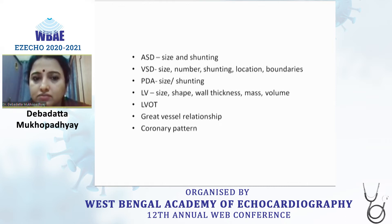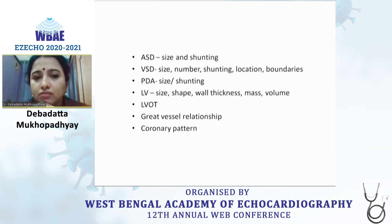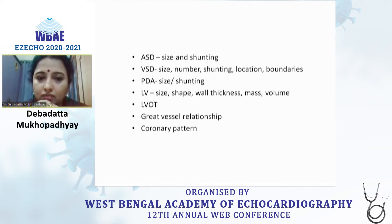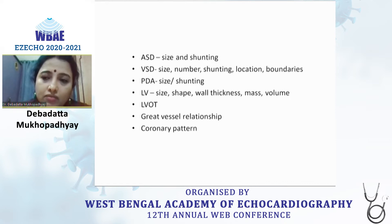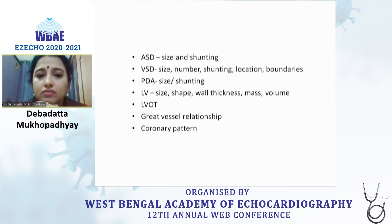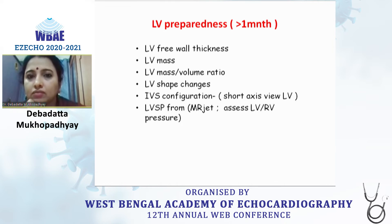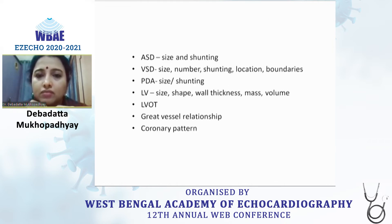Look at the physiology because the Qp:Qs ratio has to be maintained. The two main factors are the PDA and the ASD or PFO. If both are adequate and saturations are in the range of 85% and above, we are satisfied. If the PDA is small, we start prostaglandin. If the ASD or PFO is restrictive, we should go for a balloon atrial septostomy. Then assess whether the right ventricular and left ventricular outflow tracts are adequate and whether there is any obstruction.